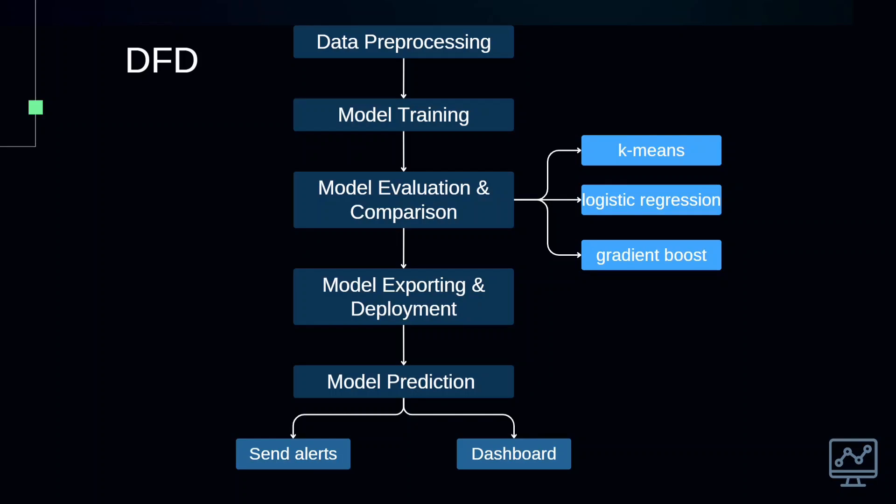Let's understand the basic flow and the ML model. First, we do data pre-processing. We have nearly 280,000 rows and 14 features in our data. After pre-processing, we train three models: K-Means, Logistic Regression, and Gradient Boost. After evaluating these three models, we selected the best fit model, which is Gradient Boost, also called the Boosted Classifier. Then after training and model selection, we exported and deployed that model. After integrating the model with the ETL pipeline, we get predictions, send alerts, and build the dashboard.